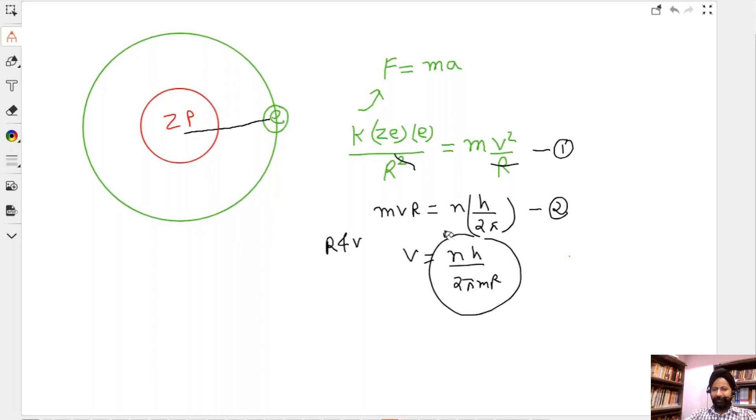Okay, take this value and then plug it in here. So let's see what I get. So I'm going to use blue color here. k z e squared by r is equal to mass times velocity square, right? Velocity square is n square h square by 4π square by 4π square m square r square. So let's see what I actually get. This r crosses out.